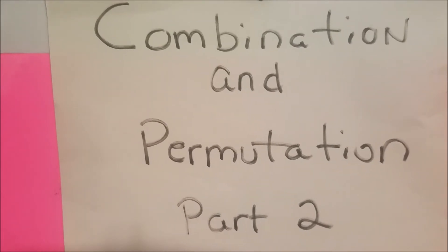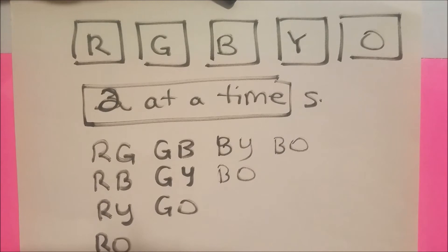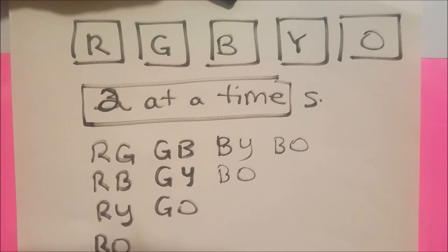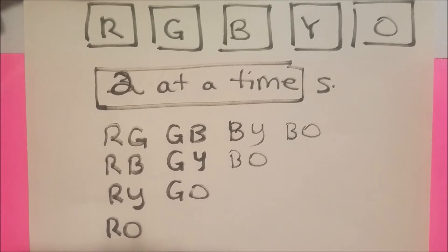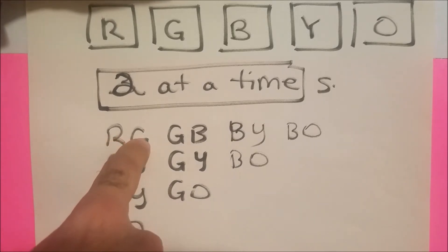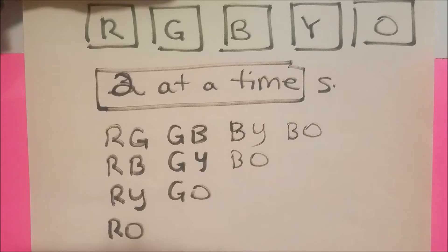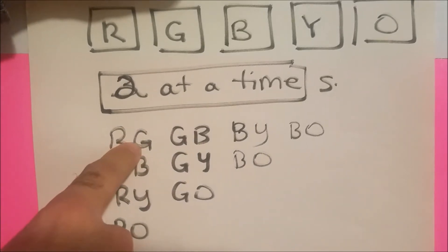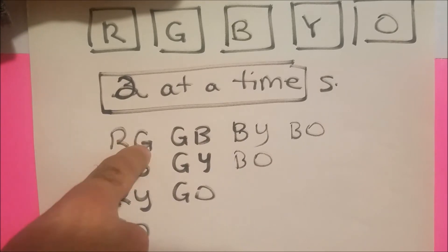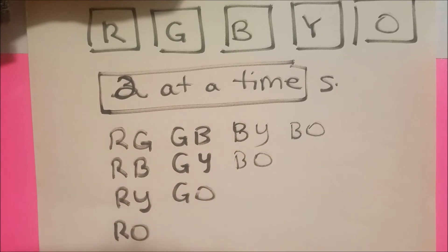Combinations and permutations, part two. Let's say we have a red, green, blue, yellow, and orange block and we want to pick them two at a time. Here are all the combinations we can have, because in combinations you can't repeat — a red and a green means you can't have a green and a red. Like ordering a burger, fries, and a shake at a fast food store: you wouldn't turn around and reorder them in a different order. That's the same thing with combinations.